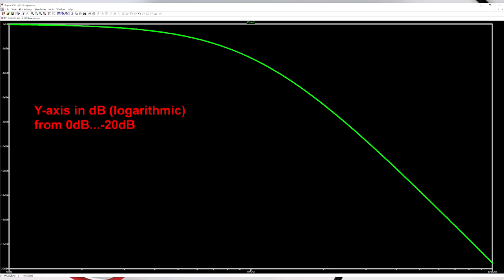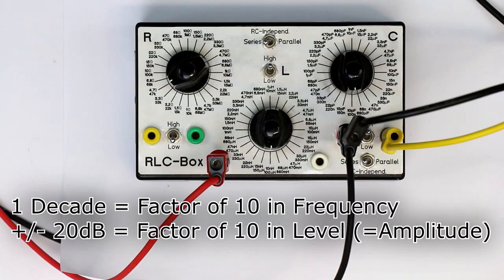Or you quite often also find a minus 20 dB roll-off per decade, and 20 dB is also a factor of 10 in level or amplitude for a factor of 10 in frequency.